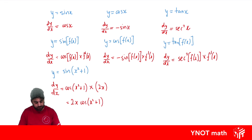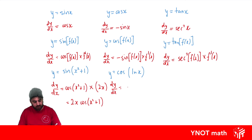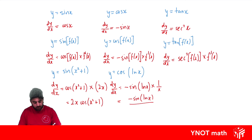What about y equals cos of ln x? dy/dx: normally when we differentiate cos we get negative sine, so no different here — we get negative sine of our function ln x. We just have to multiply by the derivative of that function, and the derivative of ln x is 1 over x. Tidying this up, it'll just be minus sine of ln x over x.